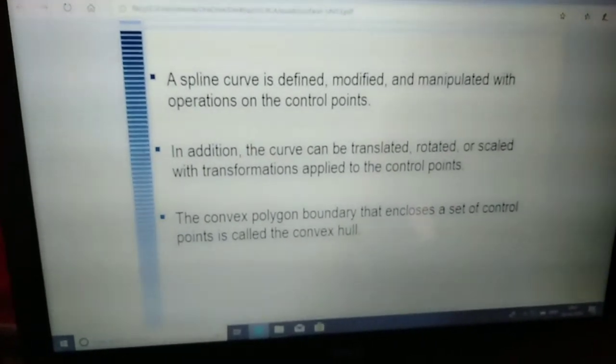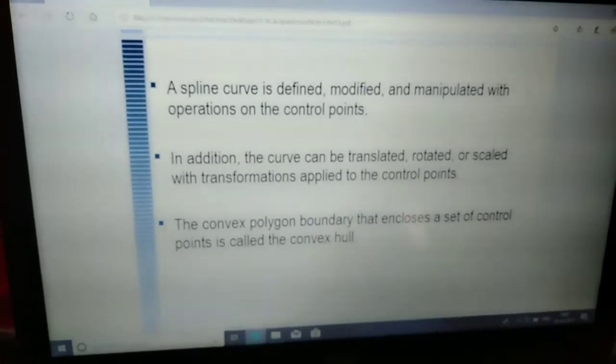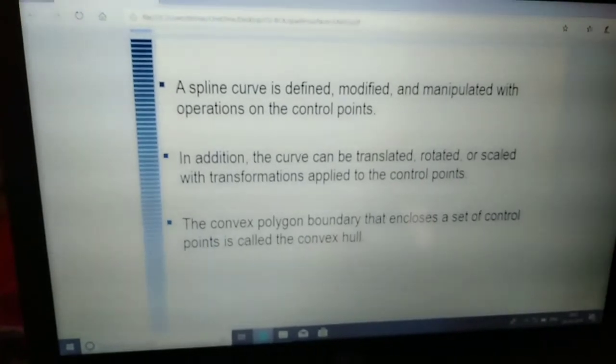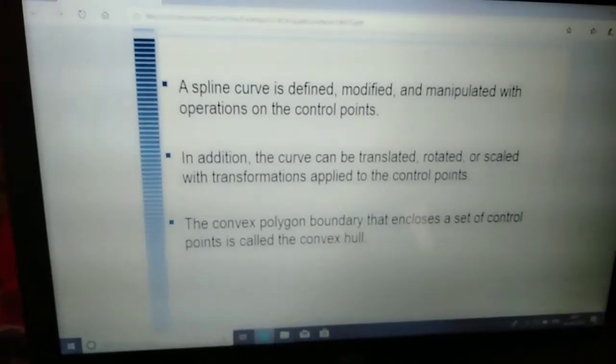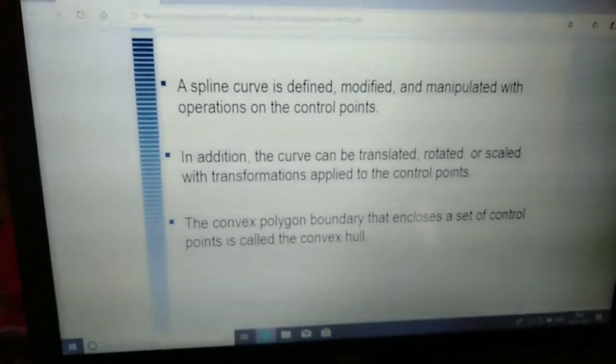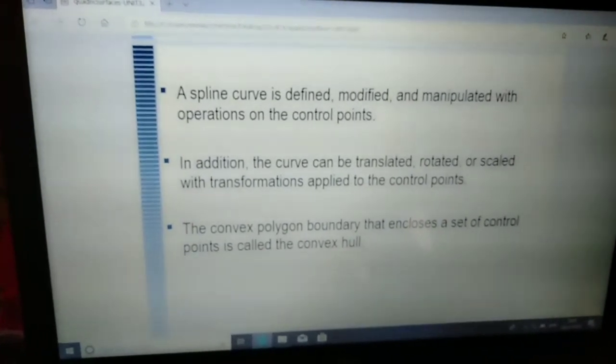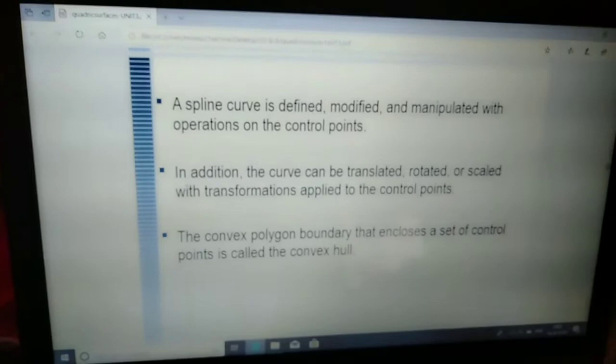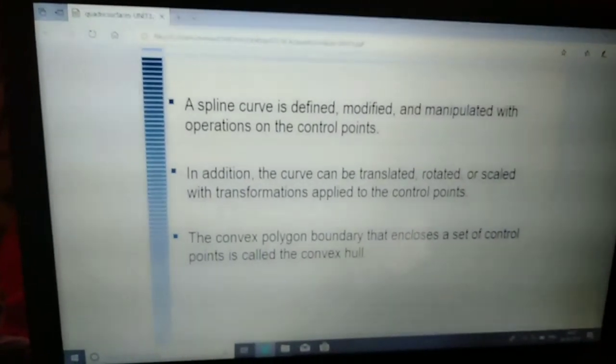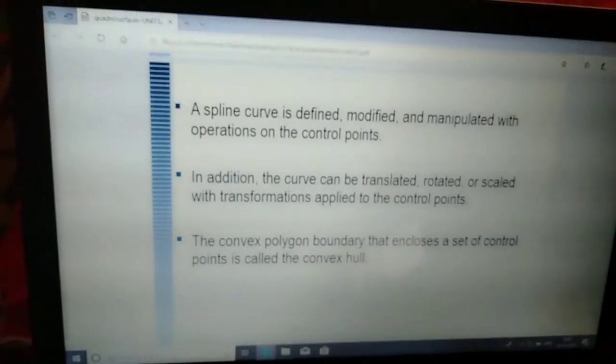With transformations applied to the control points, the convex polygon boundary that encloses a set of control points is called the convex hull. This convex hull represents the range of spline control point movements, and is made around the spline.